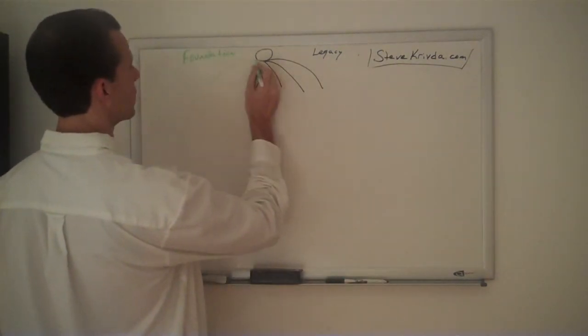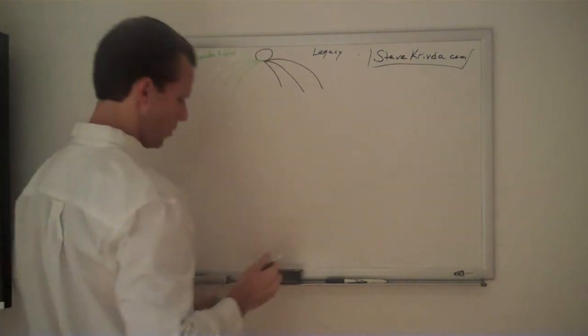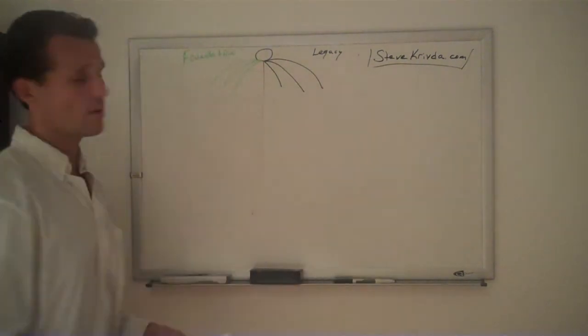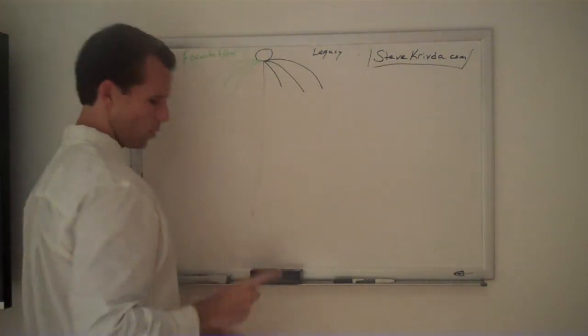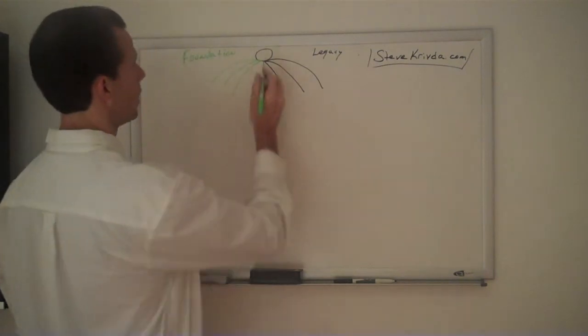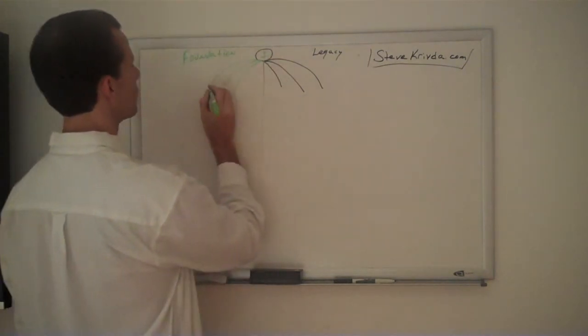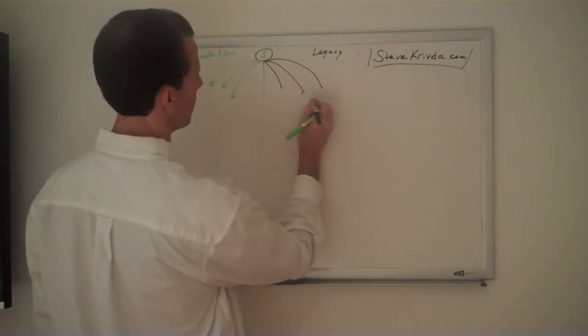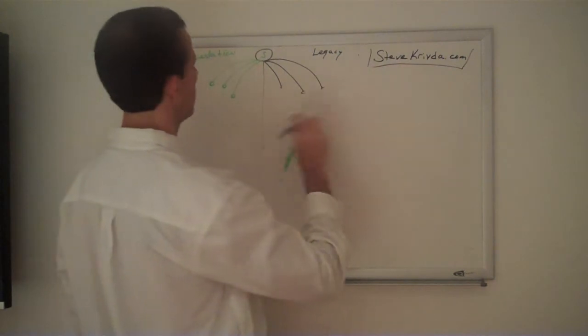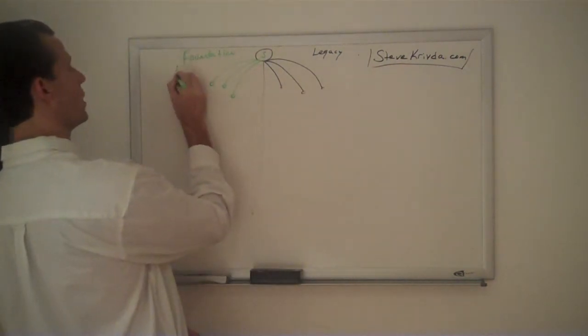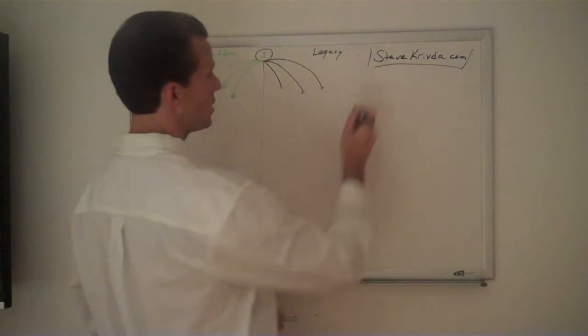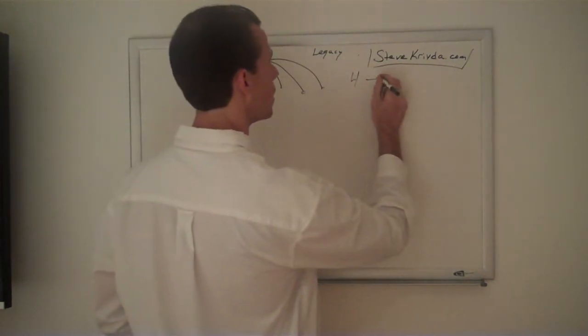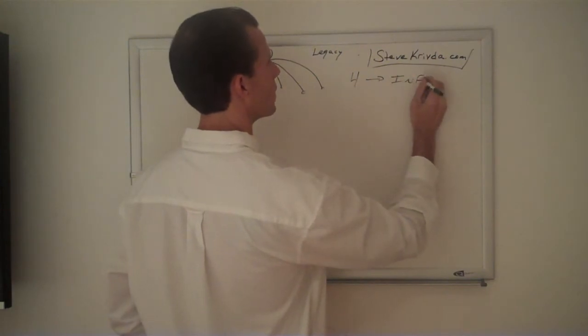But for illustration purposes, I'm going to put them here. And we'll put a line down the middle. It looks like a spider. We'll put a line down the middle so you can see what's going on here. So what we got here is this: this is me, Steve. I got my first three people over here, and I got my legacy over here. Your foundation is number one, two, three. Your legacy is number four through infinity.